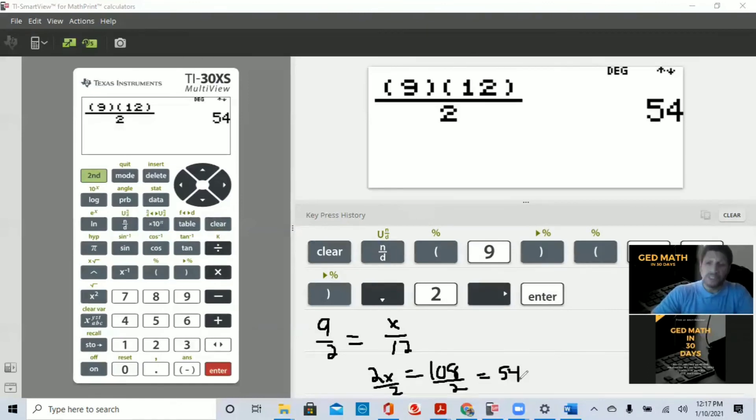So it could be a unit rate problem. It could be a scale problem. It could be a slope problem. Later on, we'll discuss slope. So slope is also a constant proportionality. So that's another way you can use proportions to solve it. So again, to solve proportions on your GED math exam, you can use equivalent fractions, unit rate, or cross-multiply.